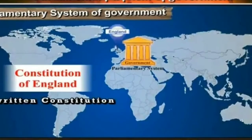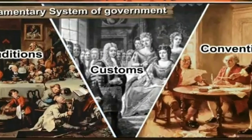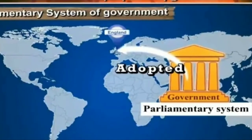The parliamentary system of government developed primarily in England. The English constitution is an unwritten constitution. Governance is carried out in accordance with traditions, customs, and conventions. India has adopted this parliamentary system. We can see some broad similarities between the parliamentary system of England and that of India.